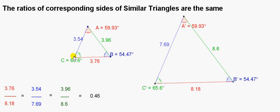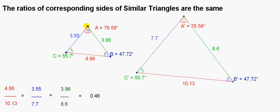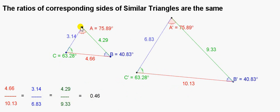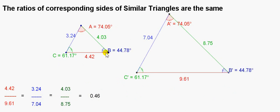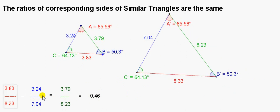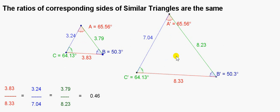So these two triangles are set up to be always similar, even as I change the angles here. You can see that these values get updated, but the ratios are always the same. So you can see that the sides of this triangle are 0.46 times the sides of the larger triangle. So we could say that this smaller triangle is a scaled-down version of this larger triangle.